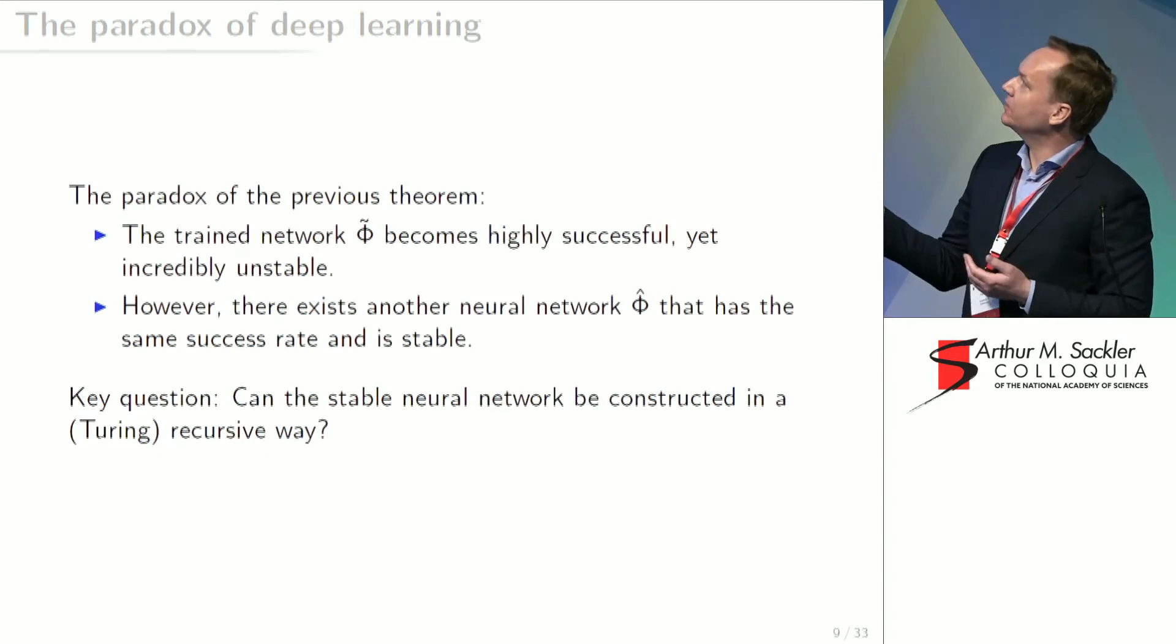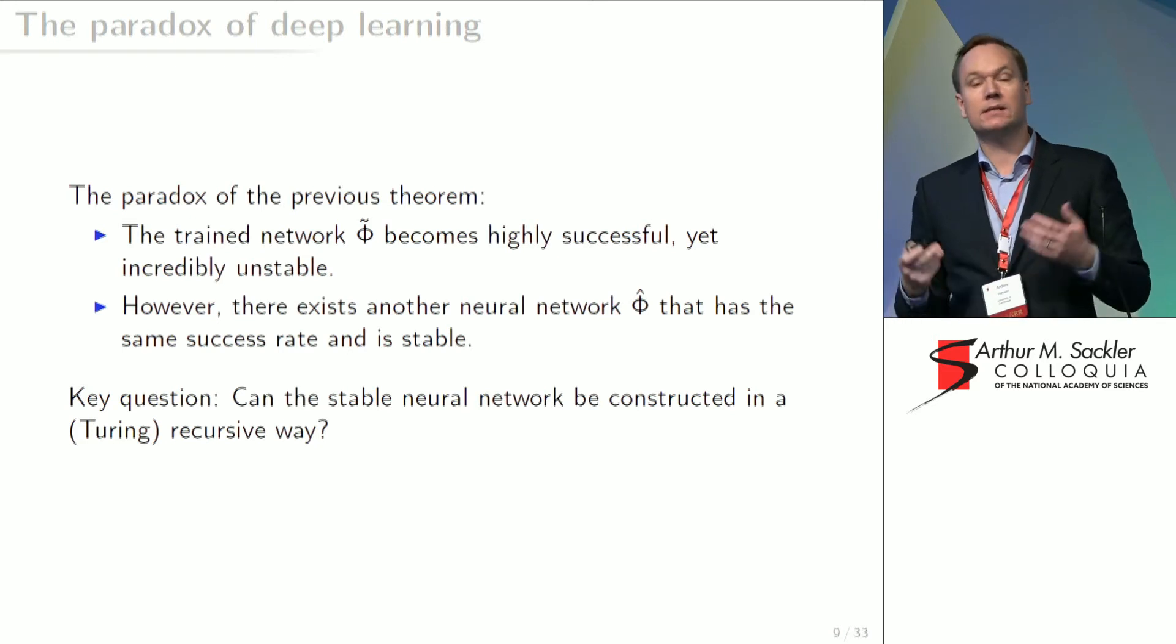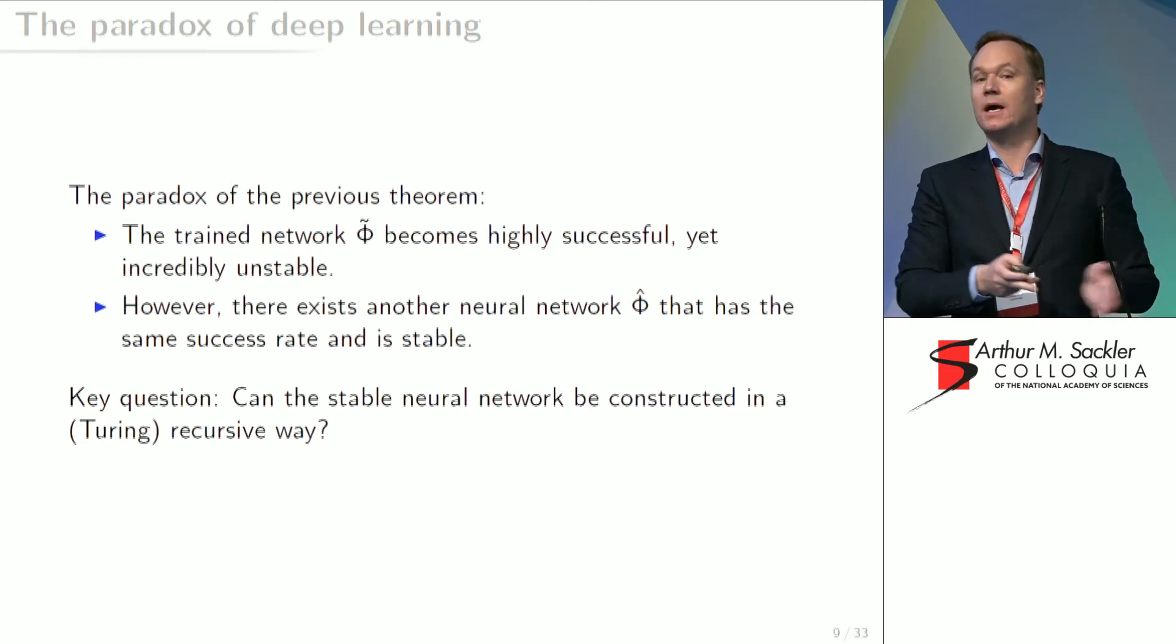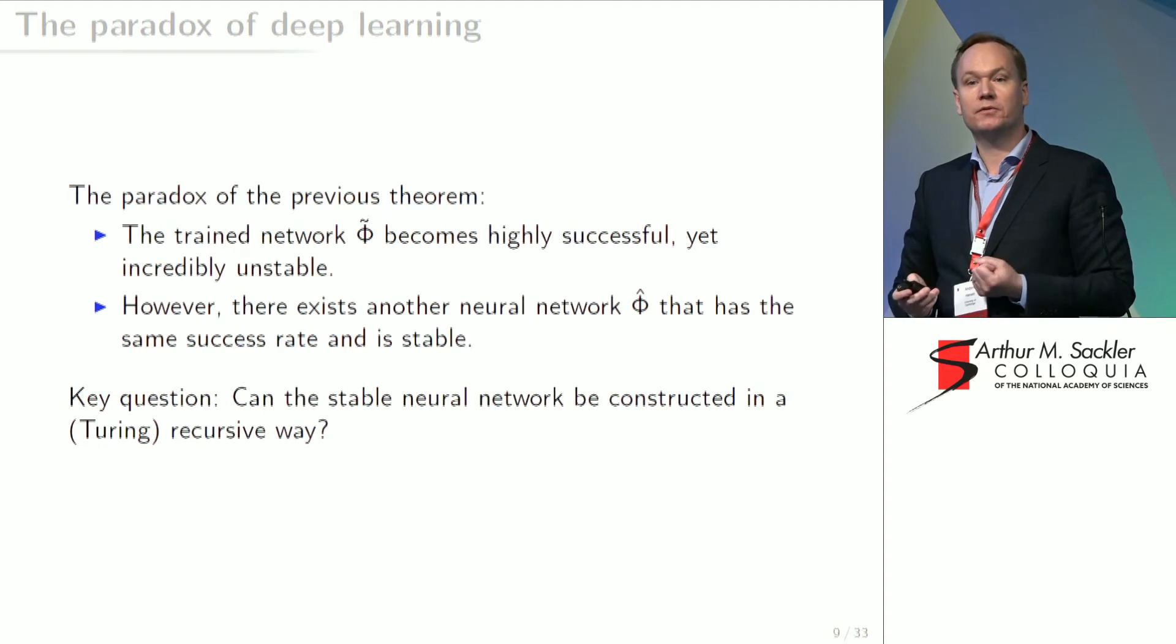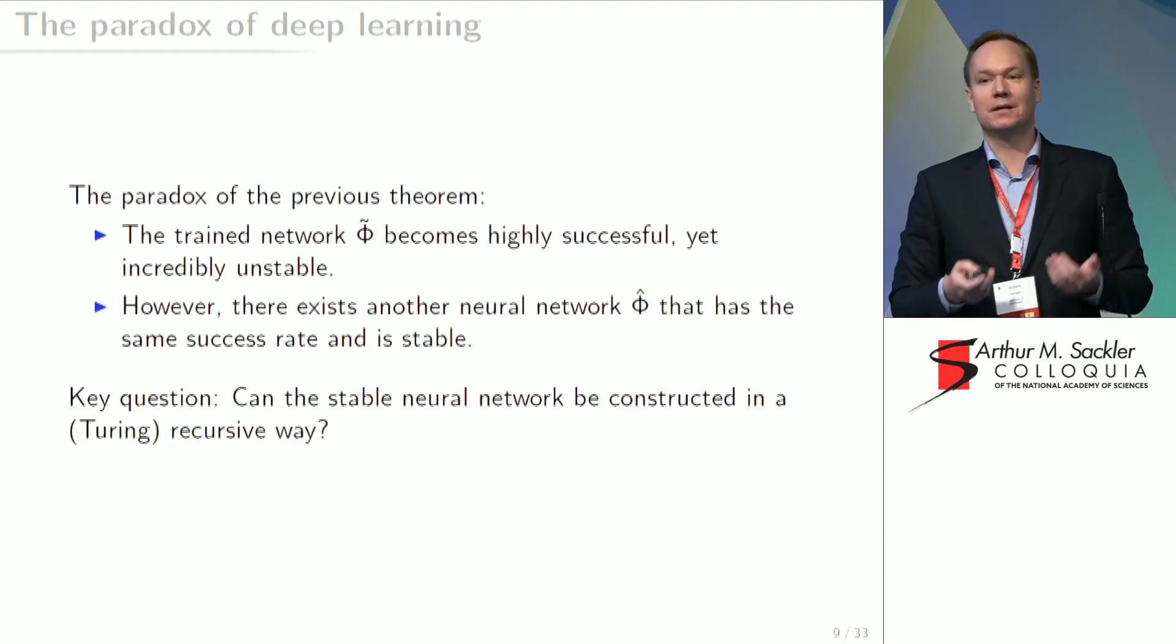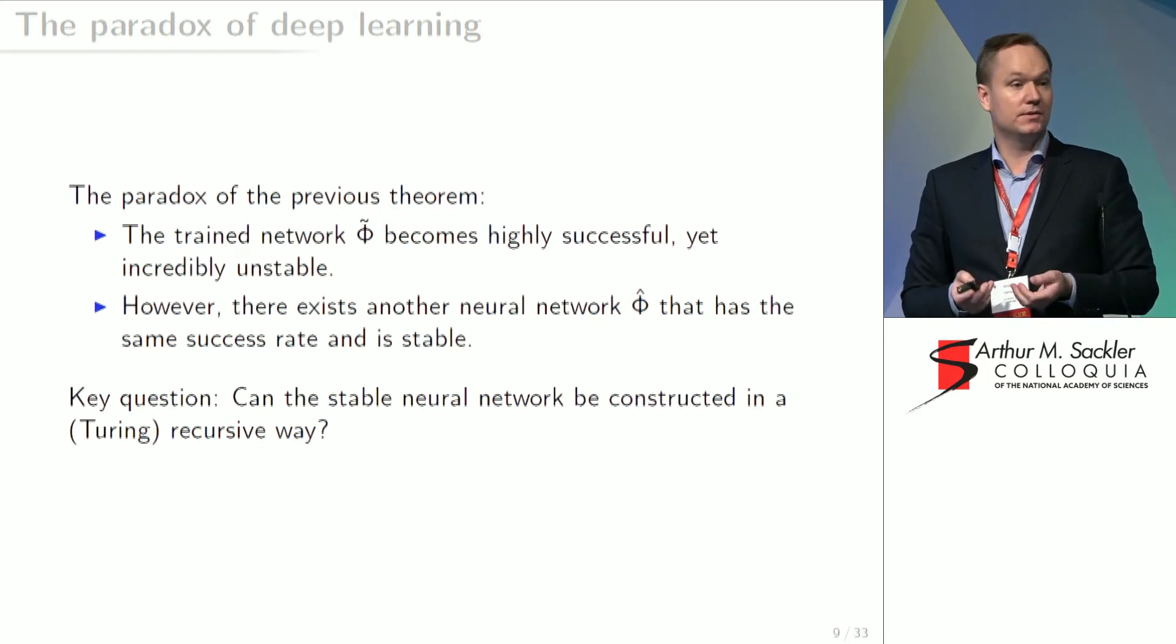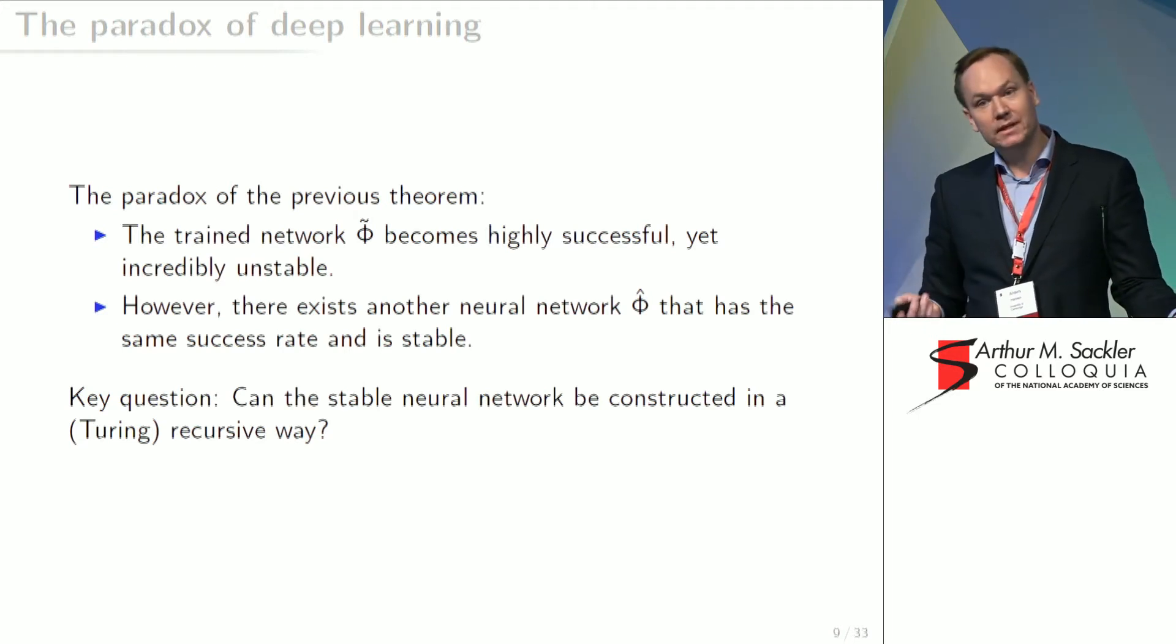So the paradox is, as I mentioned, the trained neural network becomes completely unstable. And this is exactly what we see in practice. Fantastic performance and incredible instabilities as well. But the problem is that there is a good guy, but we don't know how to construct that. And if Alan Turing was alive today, he would have asked, is there a recursive way of constructing the good guy? And this is a fundamental problem in foundations of computer science or computational mathematics. And this might be as foundational as Turing's halting problem. And this is what we need to solve.